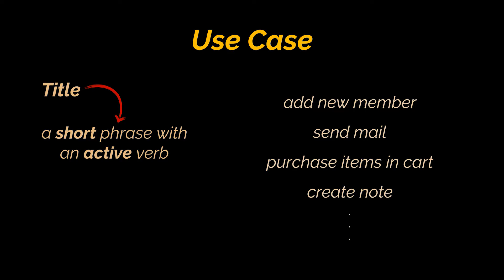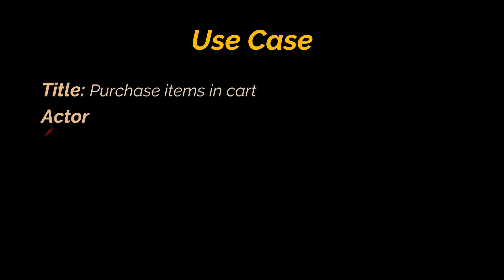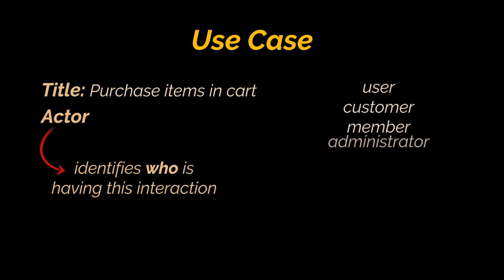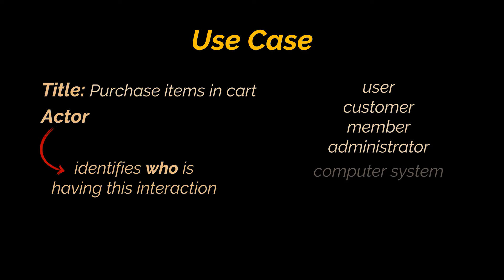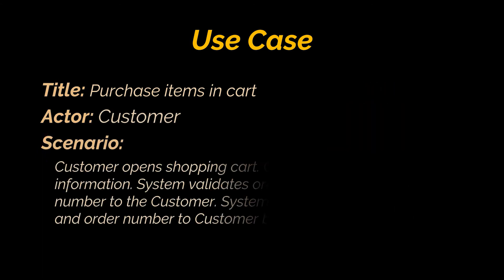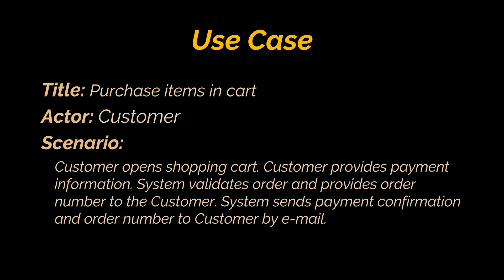We say "actor" rather than just "user" because we often need to identify exactly who is having this interaction. It could be a generic user, but also a customer, member, or administrator. It doesn't even have to be a human being — it could be another computer system or service interacting with our application. Any external entity that acts on our system is an actor.